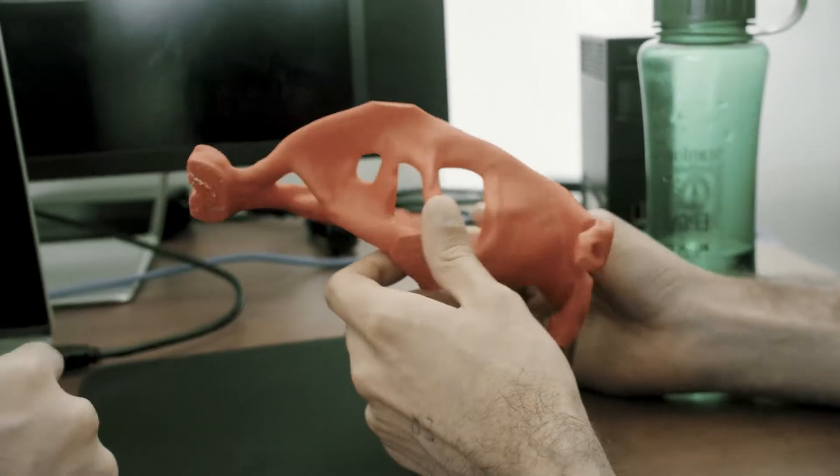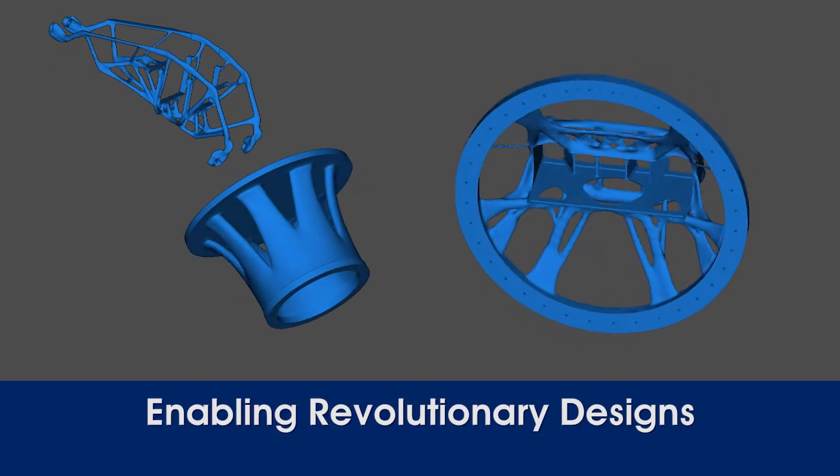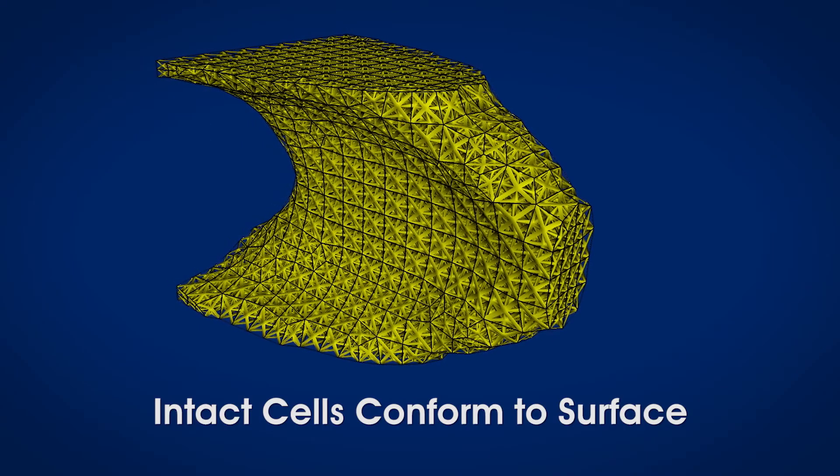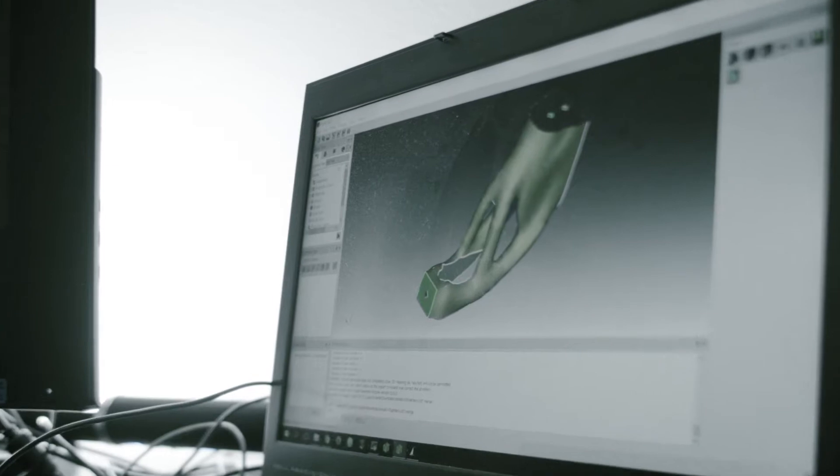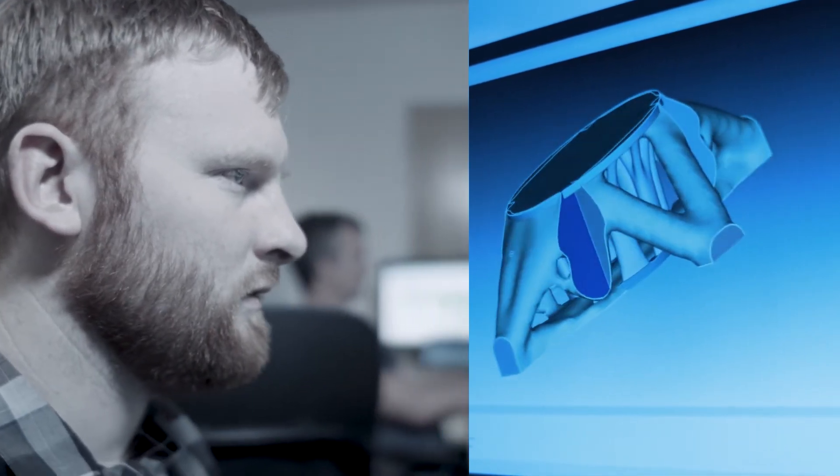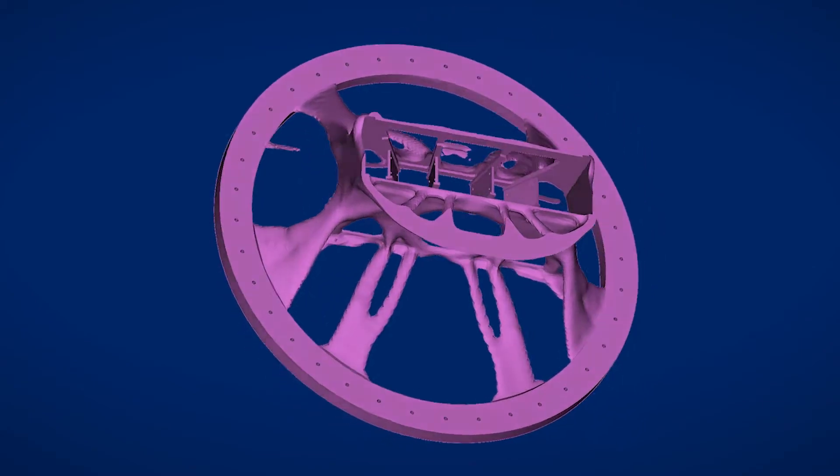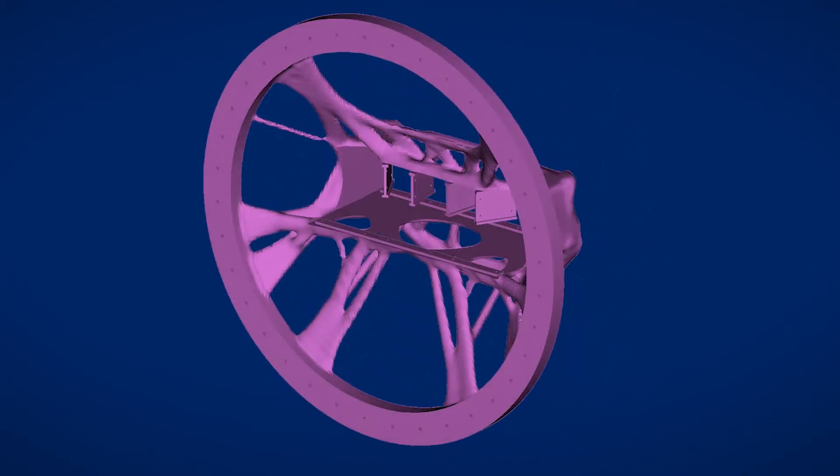PLATO eliminates guesswork in the design process by allowing users to input design requirements and specifications up front, and then generating the optimal shape to meet those requirements. PLATO's unique conformal mesh produces organic-looking structures that are stronger yet more lightweight than conventional designs. PLATO greatly speeds up the design process while still ensuring parts will achieve desired performance.